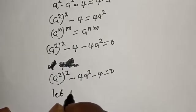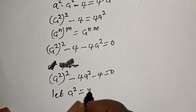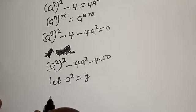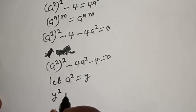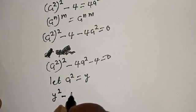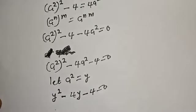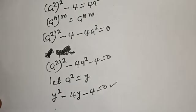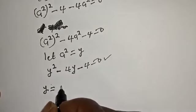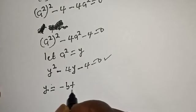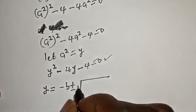Now let a squared equal y. We have y squared minus 4y minus 4 is equal to 0. This is a quadratic equation which can be solved using the quadratic general formula.